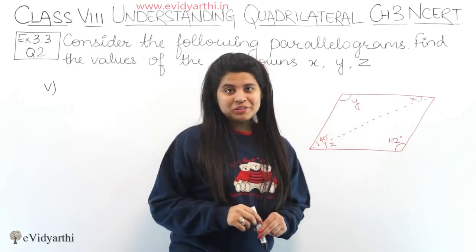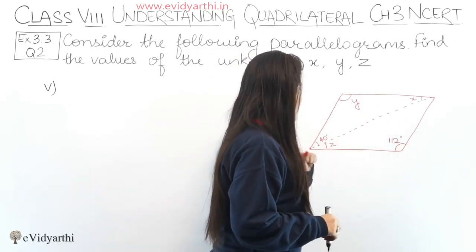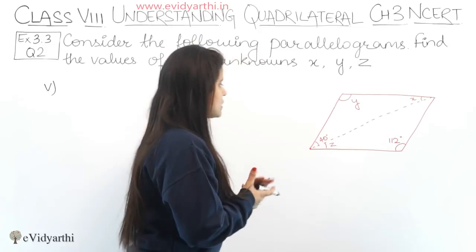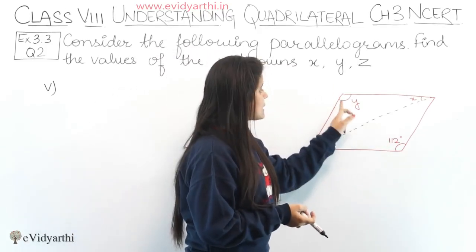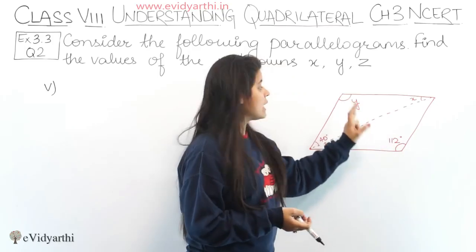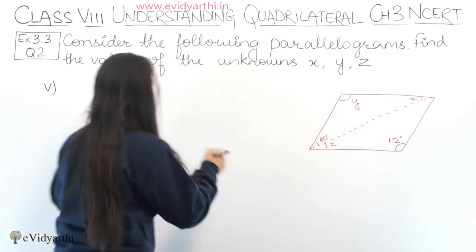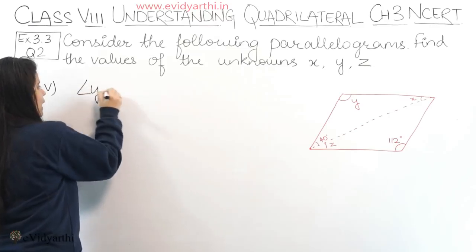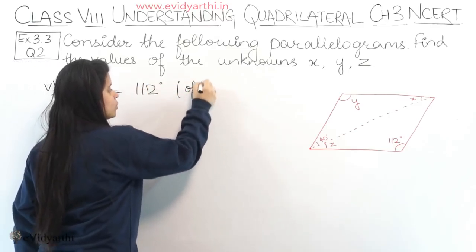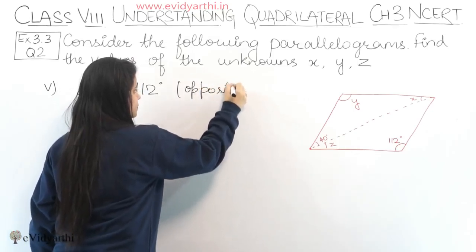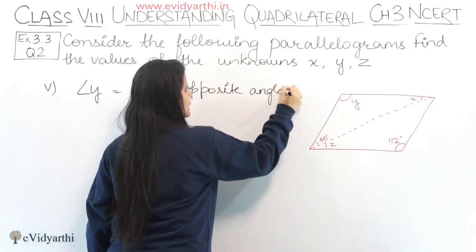Now coming to the fifth part. Again, find the value of x, y, and z. The given angle and y are opposite angles, so y = 112°. The reason: opposite angles of a parallelogram are equal.